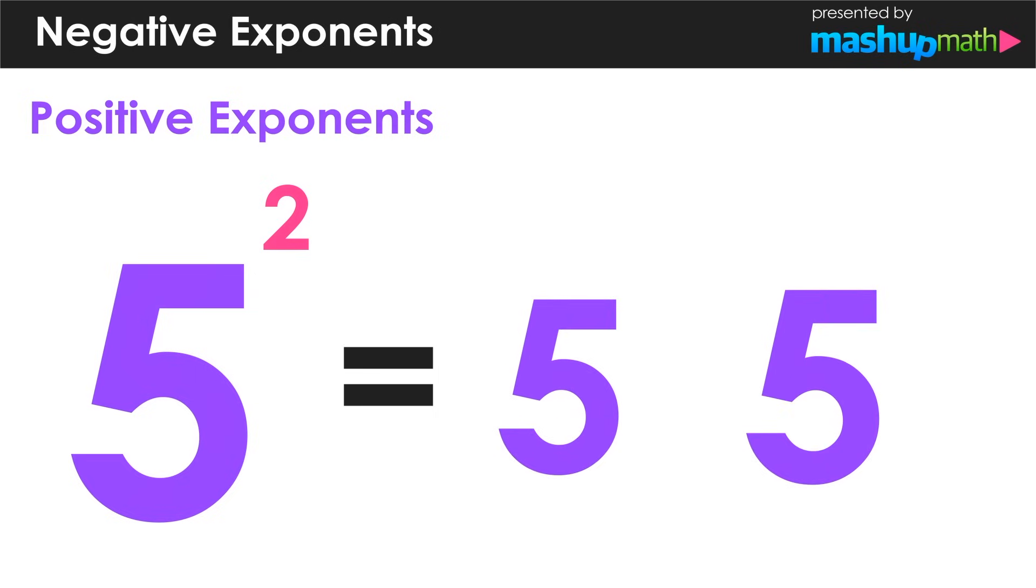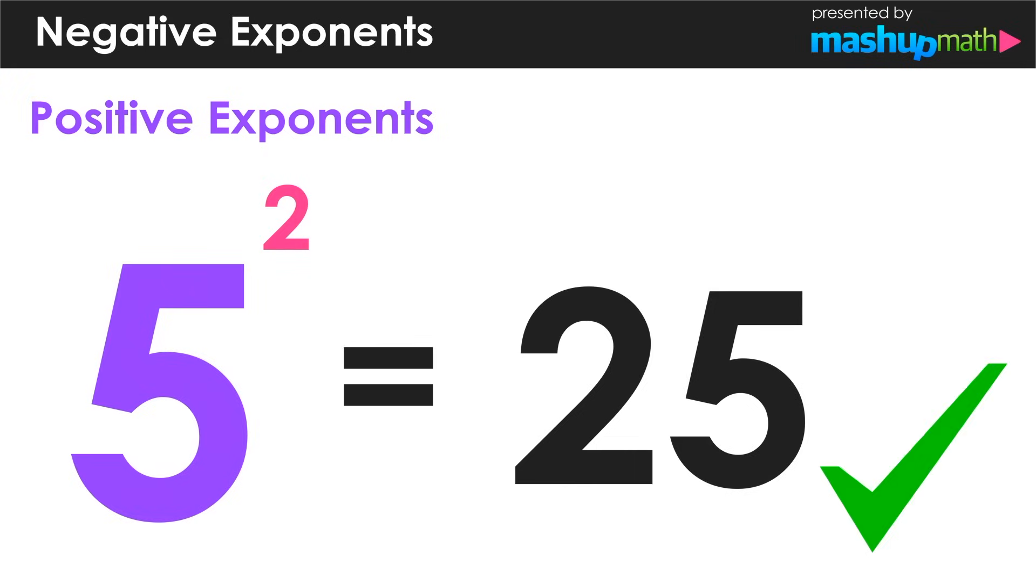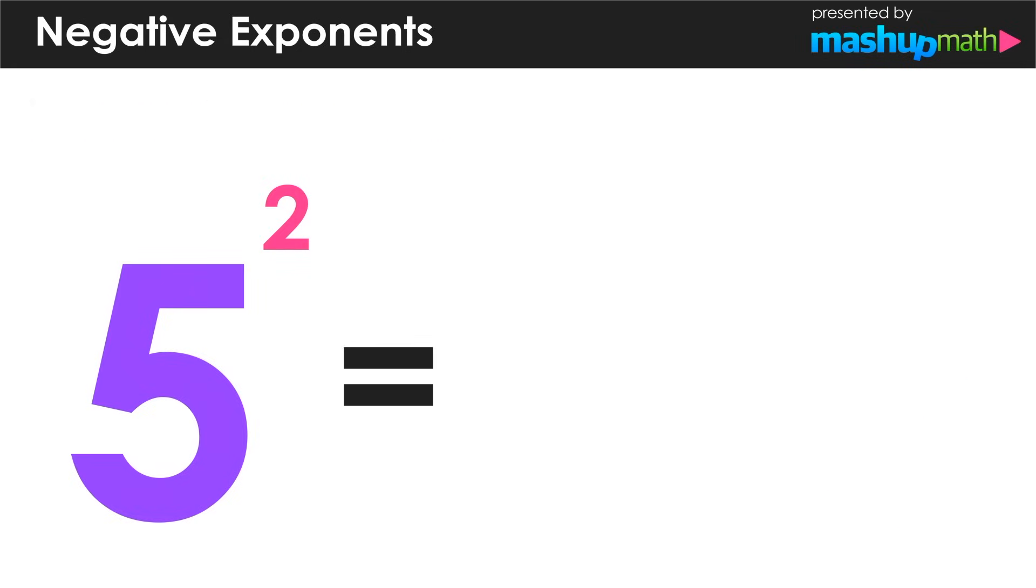We know that this is equal to 5 times 5. Another way to look at this is calling it 5 squared. And we also know that 5 times 5 is equal to 25. That's pretty easy and something that we should be familiar with.